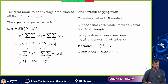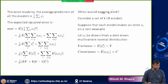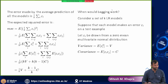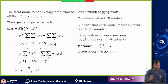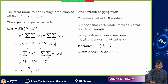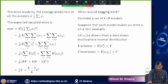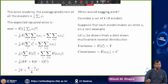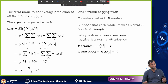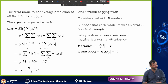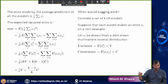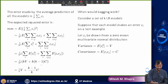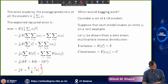After dividing by k squared, the expected mean square error when using the average of k classifiers as the final prediction is: (V/k) + C·(k-1)/k.